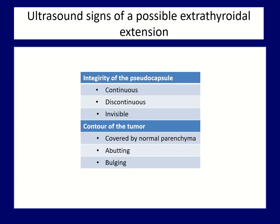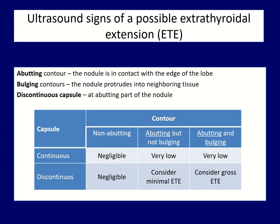The last feature to be discussed covers three signs of possible extrathyroidal extension. The first relies on the integrity of the pseudocapsule — not of the nodule, but of the thyroid lobe — while the other two refer to the contour of the nodule. If the nodule is in close contact with the outer surface of the lobe, we speak of abutment or abutting contour. If the nodule bulges into neighboring structures outside the thyroid, it means bulging. Extrathyroidal extension can be raised if the capsule is discontinuous and the nodule is abutting. Even the most suspicious combination provides only suspicion, not diagnosis, of extrathyroidal spread.